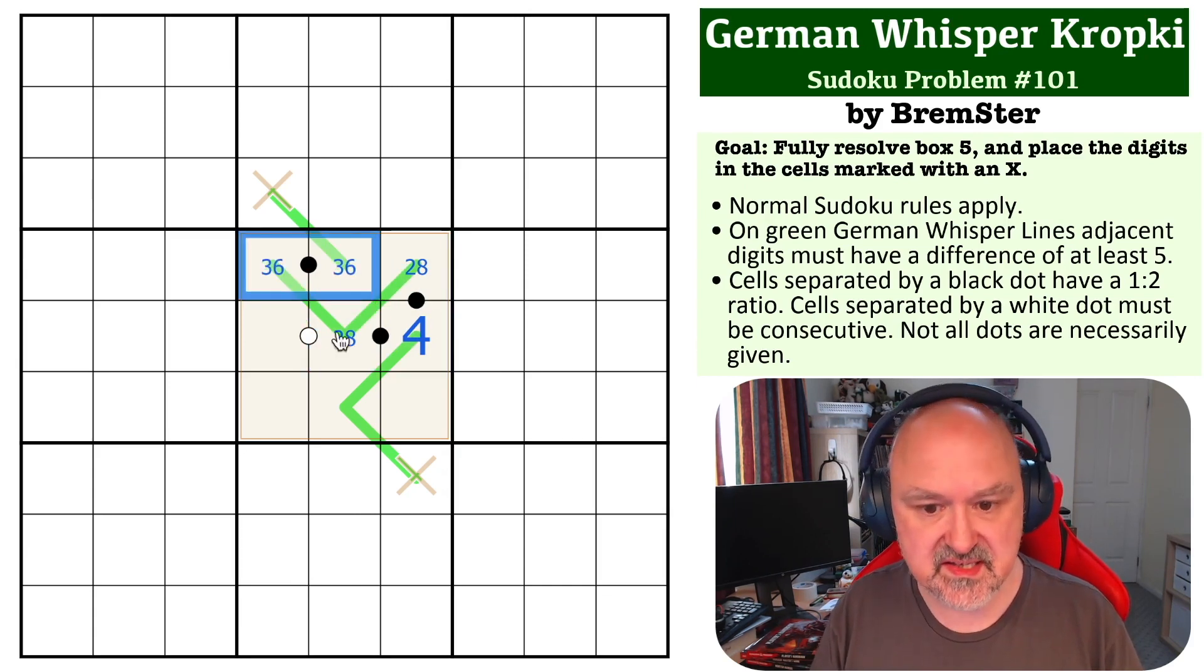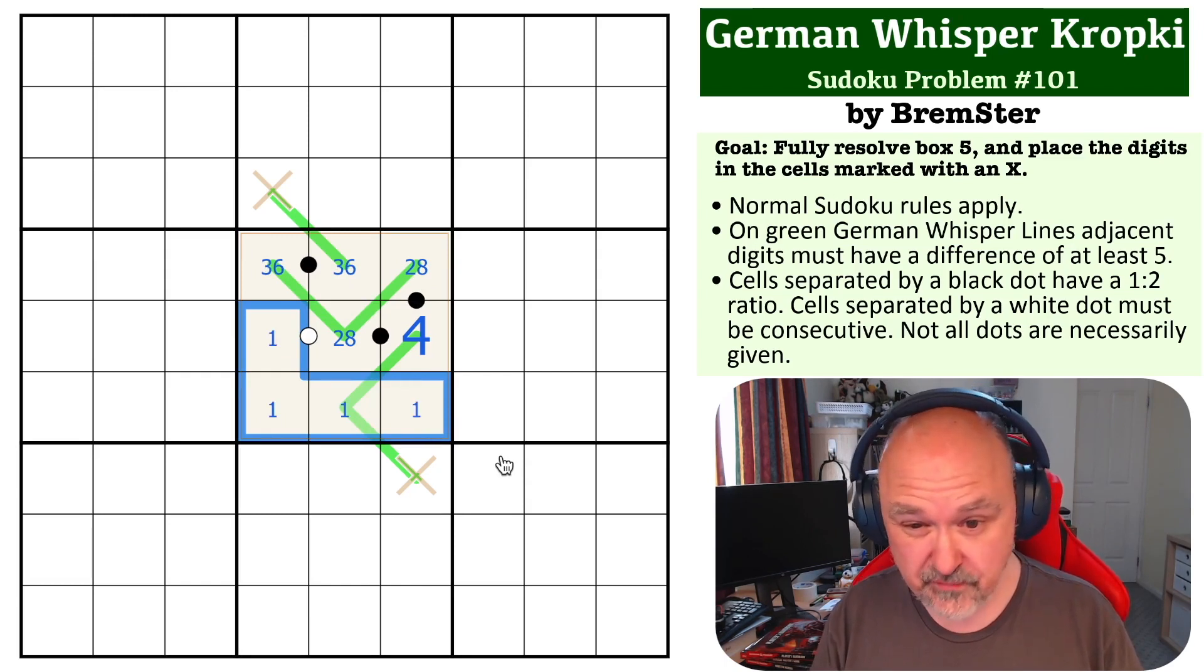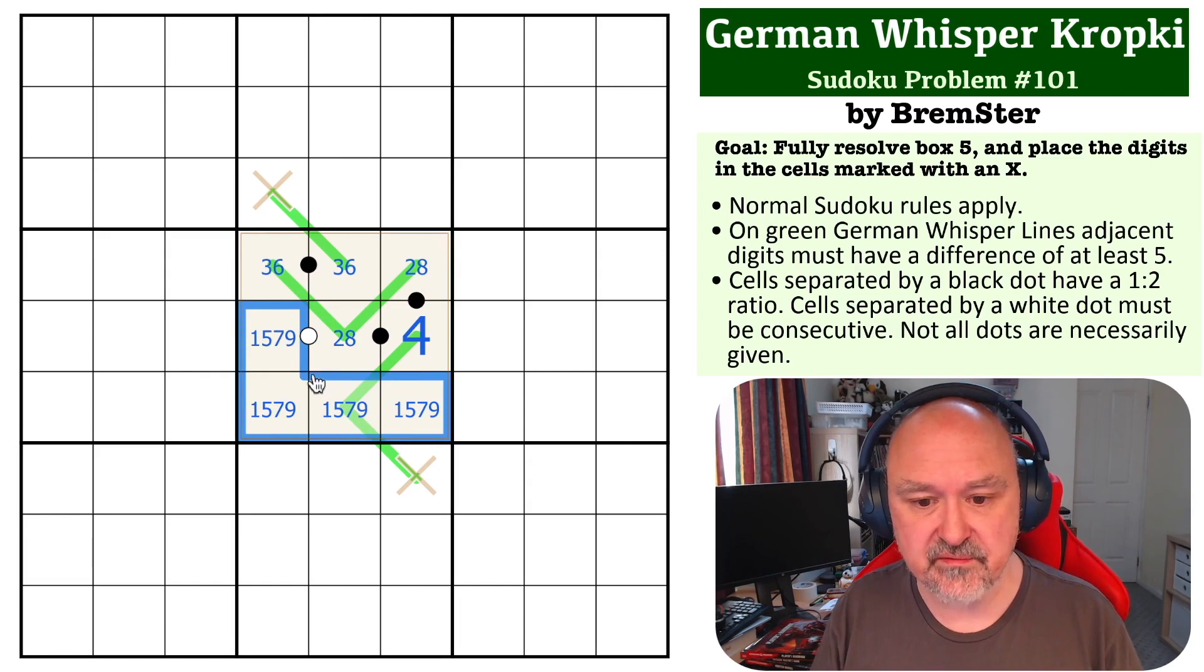We get down to the situation where we know this is a quadruple which is 1... we've got 2, 3, 4, 5, 7, and 9. 1, 5, 7, and 9.